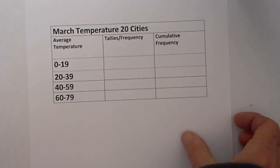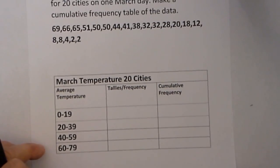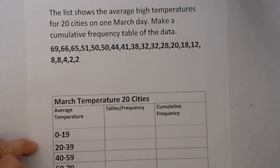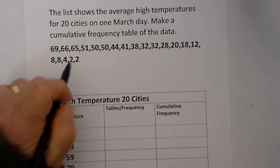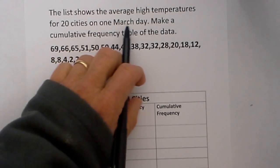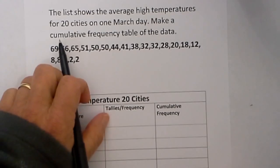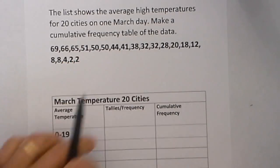Now let's get to creating a cumulative data table. Our prompt reads, The list shows the average high temperatures for 20 cities on one March day. Make a cumulative frequency table of the data.